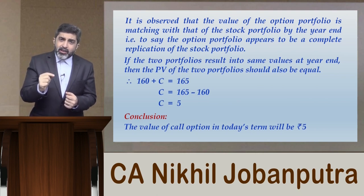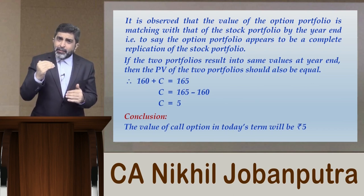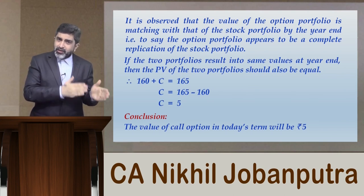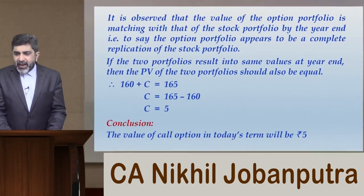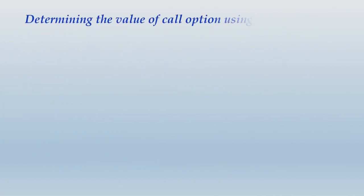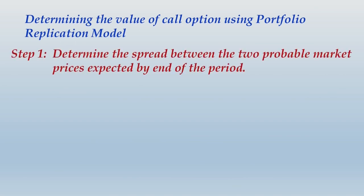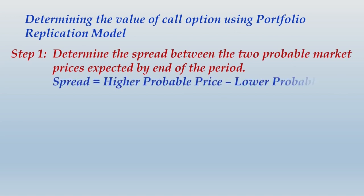Now, if a question like this comes in an examination, the answer should be presented as per the procedure learned earlier — I'll show you that process now. The heading will be: 'Determining the value of call option using portfolio replication model.' Step one: determine the spread between the two probable market prices expected by end of the period. Spread equals higher probable price minus lower probable price, which is 200 minus 190 = rupees 10.